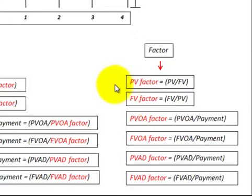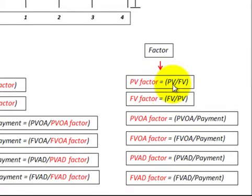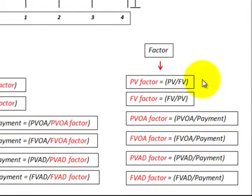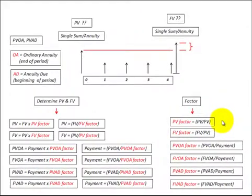If by any chance you need to know the factor, the equation is: present value factor equals present value divided by future value. So we can determine all those factors. That's how you would use these present value factors to determine present values or future values.